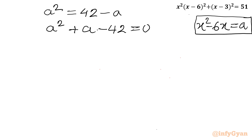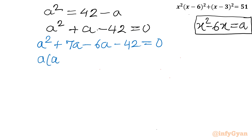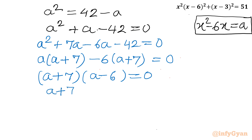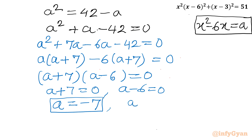Now I will use the method of factorization — we can use the formula also, but let us use factorization this time. I will write a² plus 7a minus 6a minus 42 equals 0. A is common from the first two terms, giving a(a+7), and minus 6 is common from the last two, giving the same bracket (a+7). So: (a+7)(a-6) equals 0. Applying the zero product theorem: a plus 7 equals 0, giving a equals negative 7, or a minus 6 equals 0, giving a equals 6.